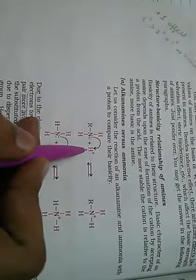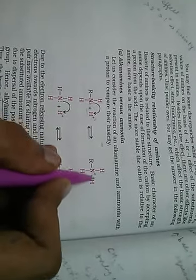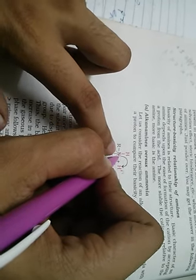Amines behave as nucleophiles in presence of an unshared electron pair because the nitrogen in the amine group has a lone pair, so it acts as a nucleophile to donate electrons. Let us compare their basicity. Which one is better, ammonia or the amine? Due to the electron releasing nature of alkyl group, because R group is rich in electrons and donates electrons to nitrogen, the electron density around nitrogen increases, so it's more likely to donate these electrons. So this is much more basic compared to ammonia.